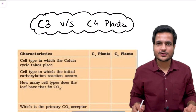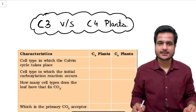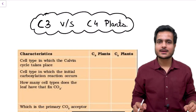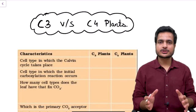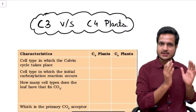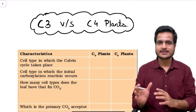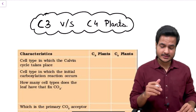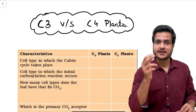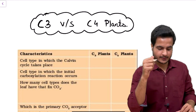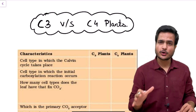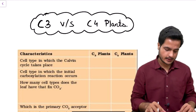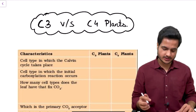Hello everyone. In this video we will be discussing the table of NCERT distinguishing between C4 plants and C3 plants. In this table we have 17 points and we will discuss each point in detail. Let's start the discussion.